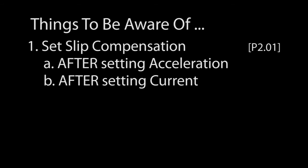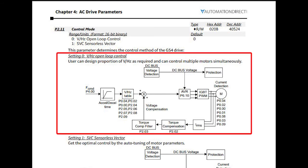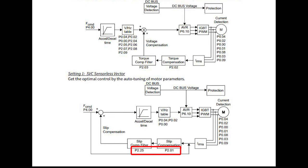We used parameter 211 to set the sensorless vector mode. If you look at the description of that parameter in the manual, you'll see block diagrams showing how the volts hertz and sensorless vector modes operate. What I really like about these diagrams is they also show you all the pertinent parameters you will want to use for each function — the volts hertz setup, the motor parameters you need to set, the slip compensation, the automatic voltage regulation, etc. I love that handy reference.